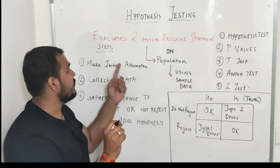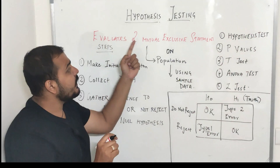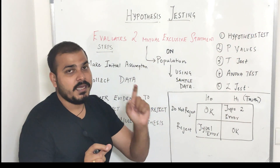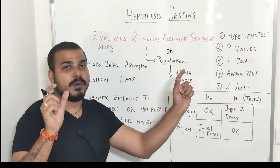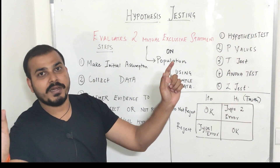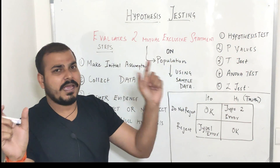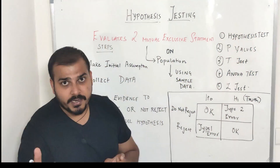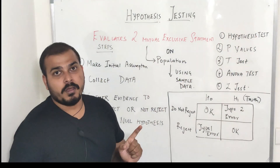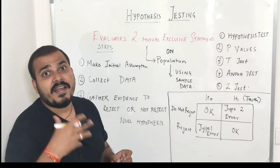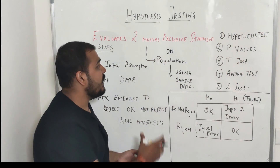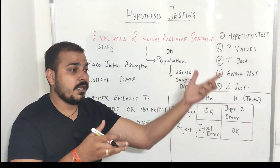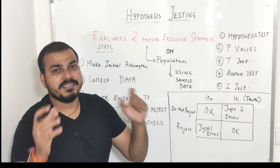We evaluate 2 mutually exclusive statements — either this one can be true or this one can be true. It may be any statement. On a population data using sample data, we finally conclude that this population belongs — means it is true for a particular statement or the other statement.